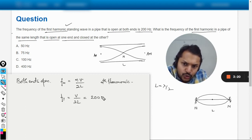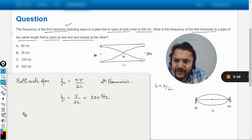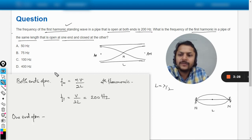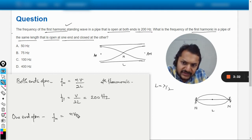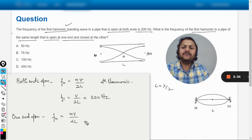Fine. Now if I talk about one end open and one end closed, for that we know that the general formula is given by nV divided by 4L.